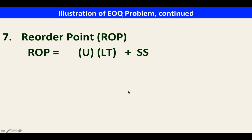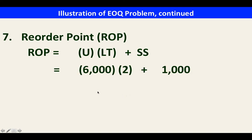For the reorder point, the formula is: usage × lead time + safety stock. With usage of 6,000 units per week × 2 weeks + 1,000 safety stock, the reorder point is 13,000 units.